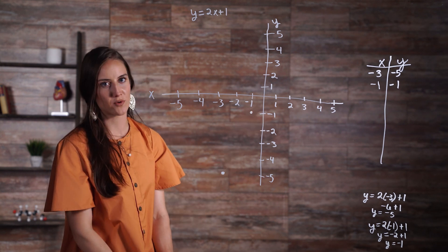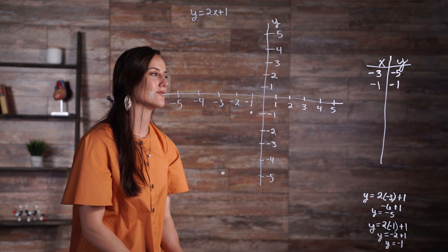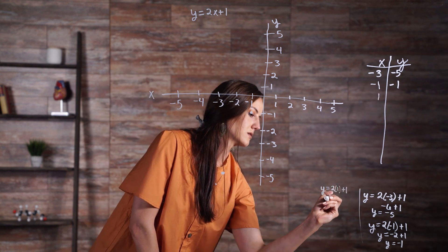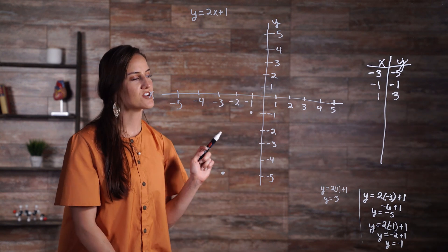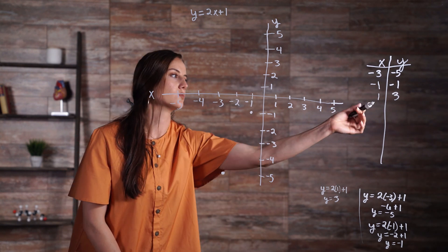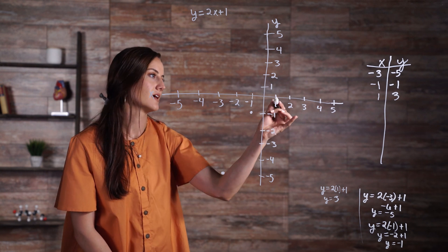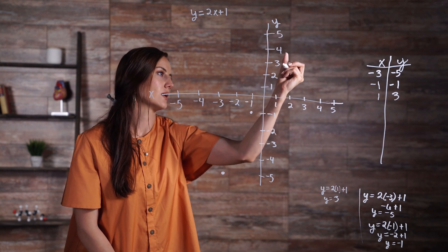Let's quickly plot two more points. We'll try an x value of 1. So now we have our next set of coordinates, that's 1 and 3. So we go and we find 1 on the x-axis, and then we go up to 3 on the y-axis.